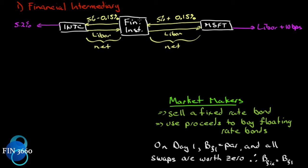The swap rate is five percent from the financial institution's perspective. However, from Microsoft's perspective it is 5.015%, and from Intel's perspective it is 4.985%. We can think of that as the bid-ask spread that the financial institution is willing to post to enter into a fixed-for-floating agreement. I'll expand on that later.